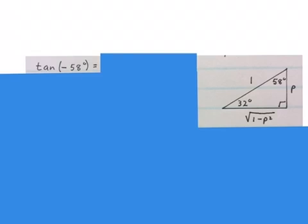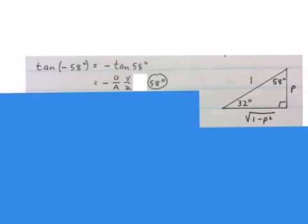The next question we have to write in terms of P is tan minus 58 degrees. Again, we're using reduction, so this becomes minus tan 58 degrees. You keep the minus, and you know that tan is O over A from Sokatoa.